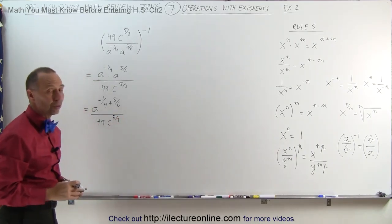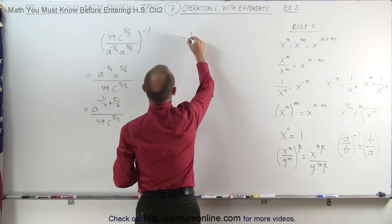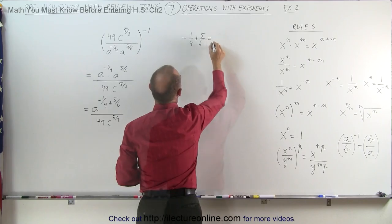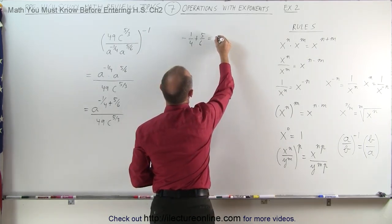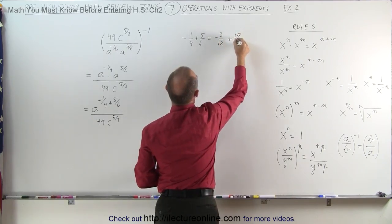Now how do we add negative 1 fourth plus 5 over 6? Let's do that on the side over here: negative 1 fourth plus 5 over 6. The common denominator is 12, which means this can be written as minus 3 over 12 plus 10 over 12.